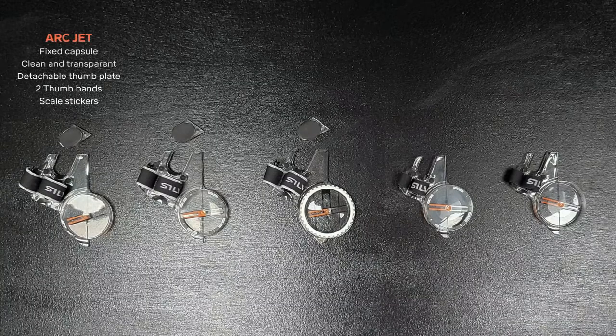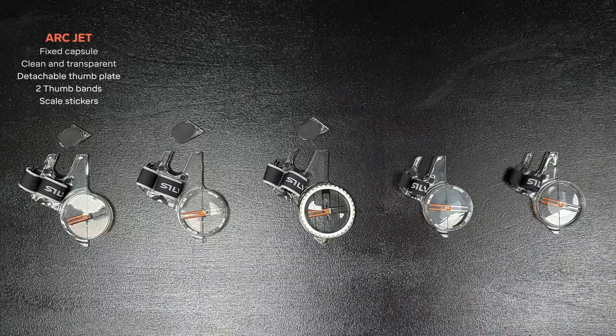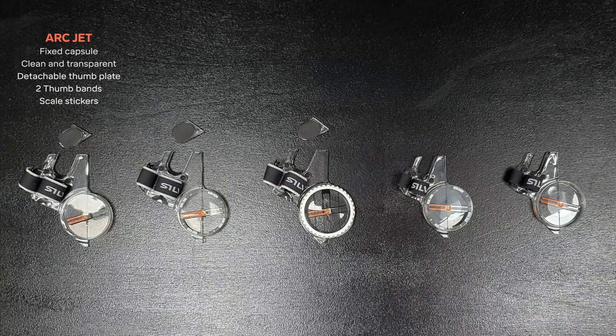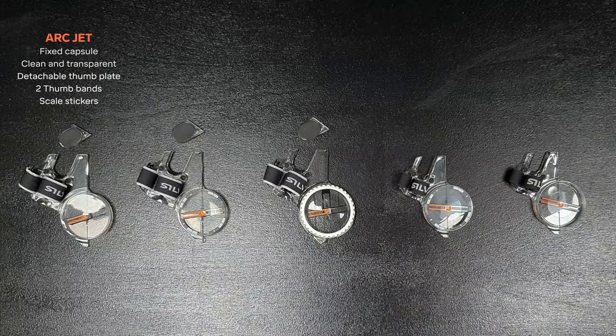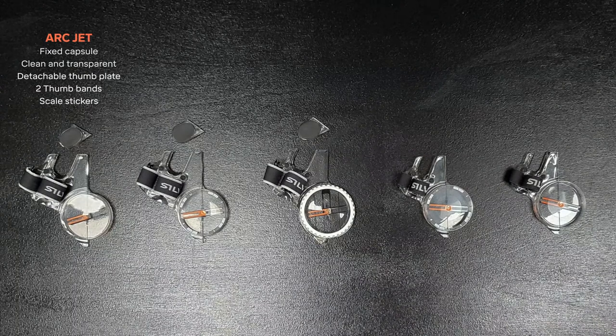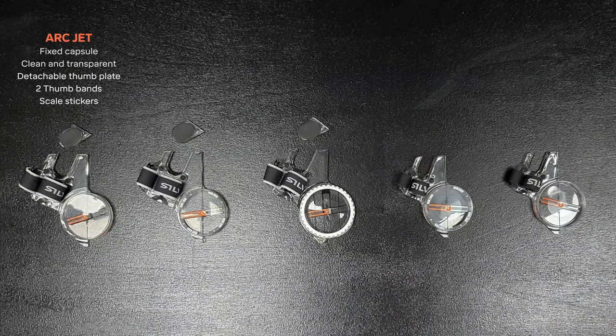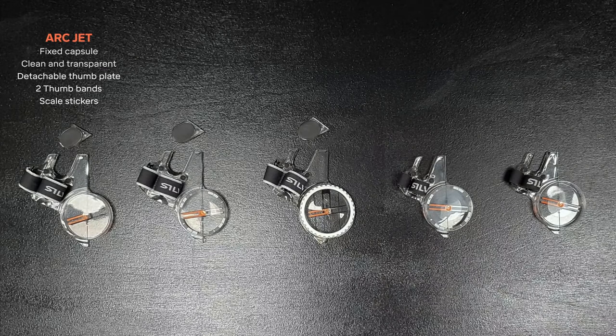The Arcjet is your compass if you are looking for a high performance thumb compass with a clean, fixed capsule without distractions. This provides lots of transparency to increase the map visibility. This compass has all the high end qualities that you need for fast navigation while running.